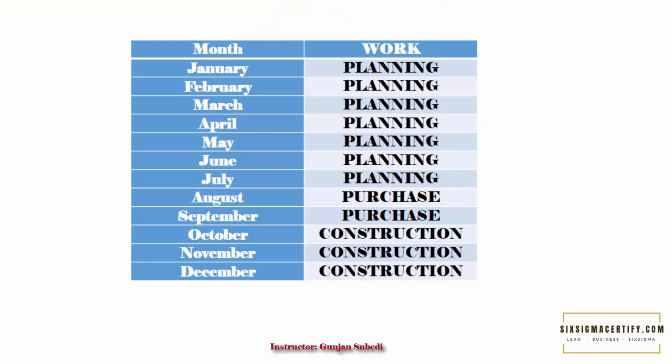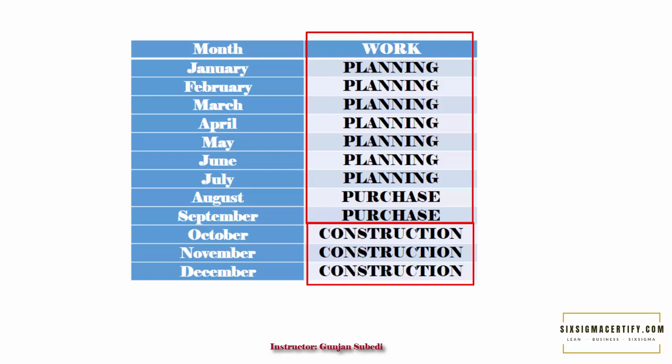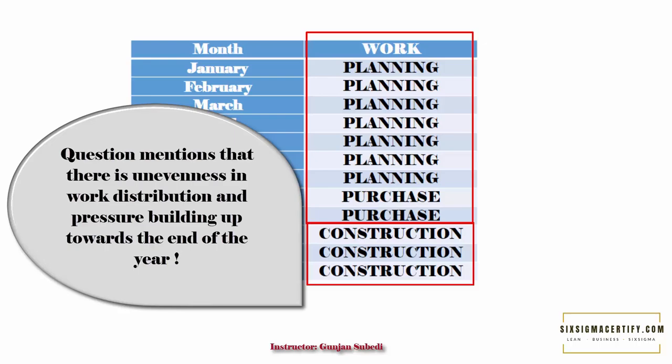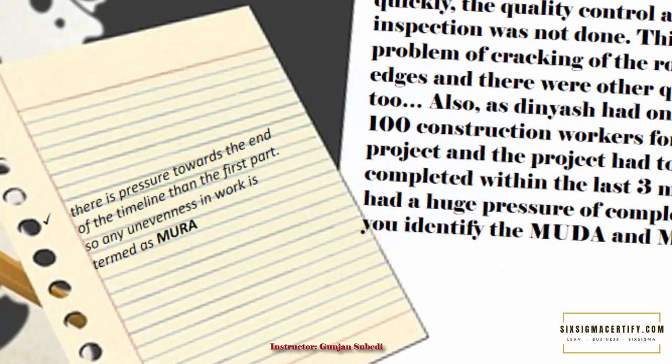So this seems like a long question and it could be confusing. Let me explain. Basically, what Dinesh did was utilize the major time just for planning and purchasing. There was real construction work only towards the end of the year — only three months of the entire project was actually used in construction. So there was a huge pressure. When we look at the timeline, we see unevenness in the schedule — there is more pressure towards the end than in the first part of the project. Any unevenness in the work is termed Mura. So here, there is Mura.